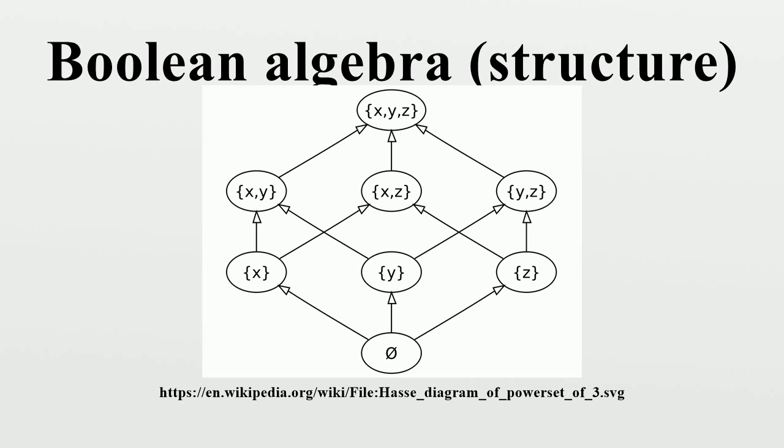Every Boolean algebra gives rise to a ring by defining a + b = (a ∧ ¬b) ∨ (¬a ∧ b) and a · b = a ∧ b. The zero element of this ring coincides with the zero of the Boolean algebra. The multiplicative identity element of the ring is the one of the Boolean algebra.